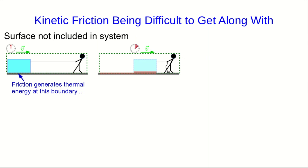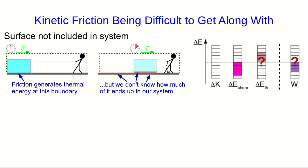Friction is going to generate thermal energy at this boundary between the floor and the box. The problem here is that we don't know how much of that thermal energy ends up in our system. Some of it will warm up the box and be in our system, and some will warm up the floor and be outside. So our energy accounting is now quite difficult. We know the system gains thermal energy, but we don't know by how much.